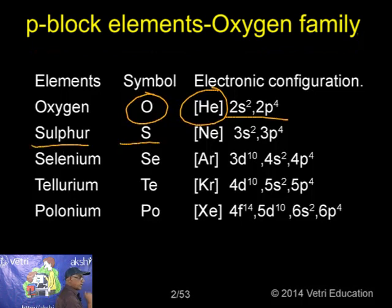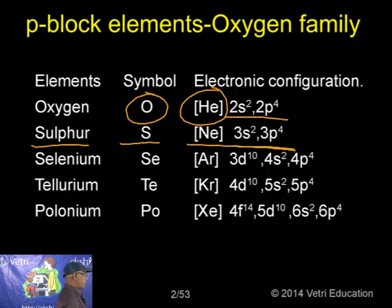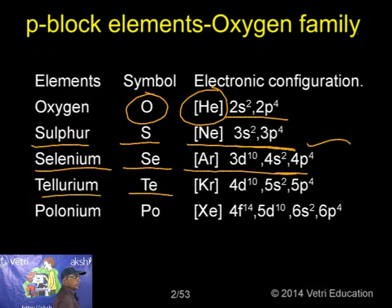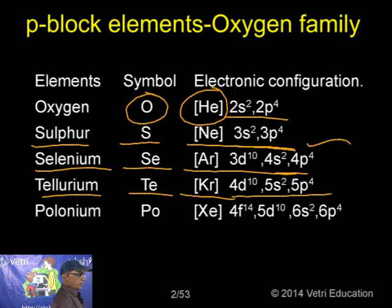Sulphur has symbol S with electronic configuration Neon plus 3s² 3p⁴. Selenium has symbol Se with configuration Argon plus 3d¹⁰ 4s² 4p⁴. Tellurium has symbol Te with configuration Krypton plus 4d¹⁰ 5s² 5p⁴.